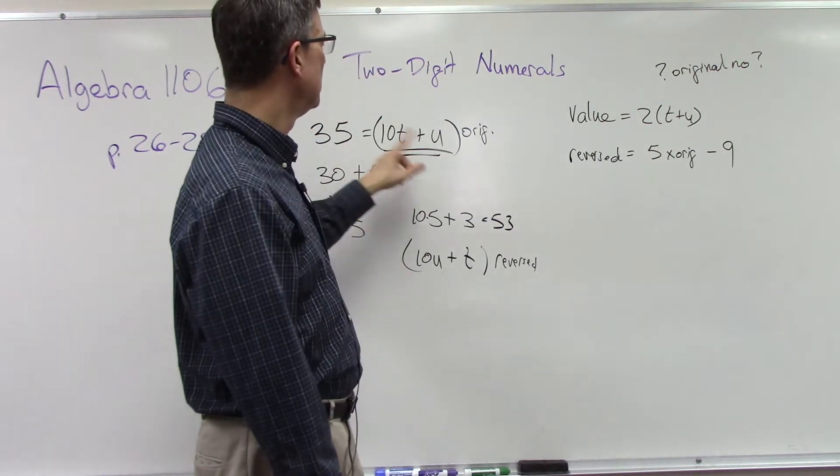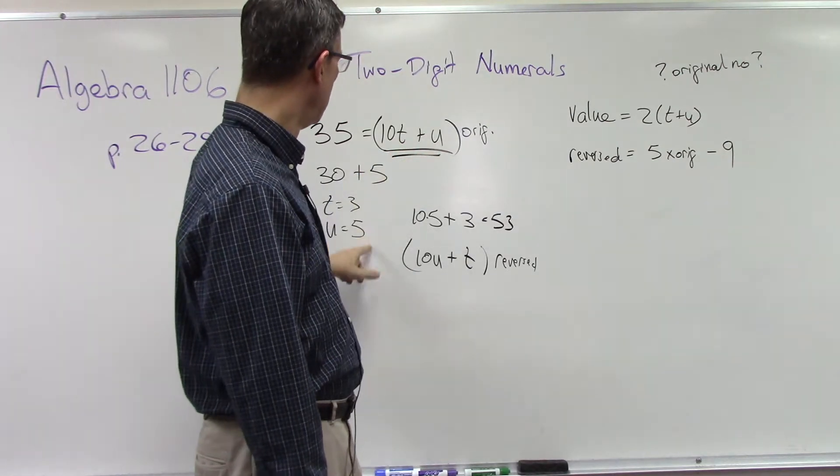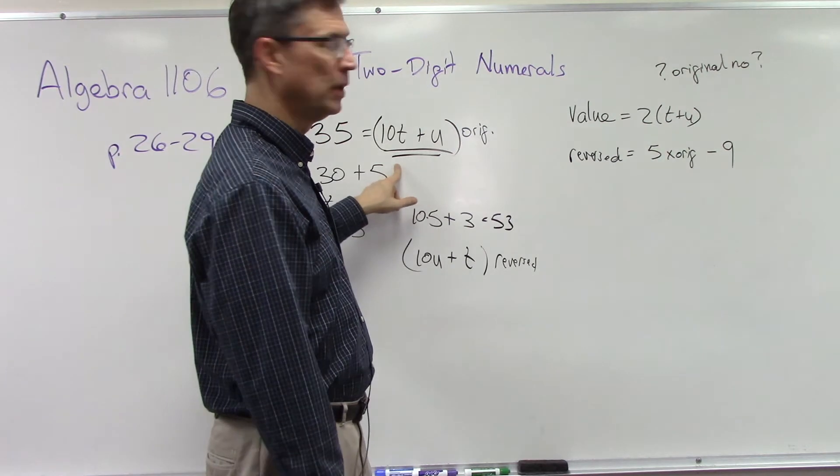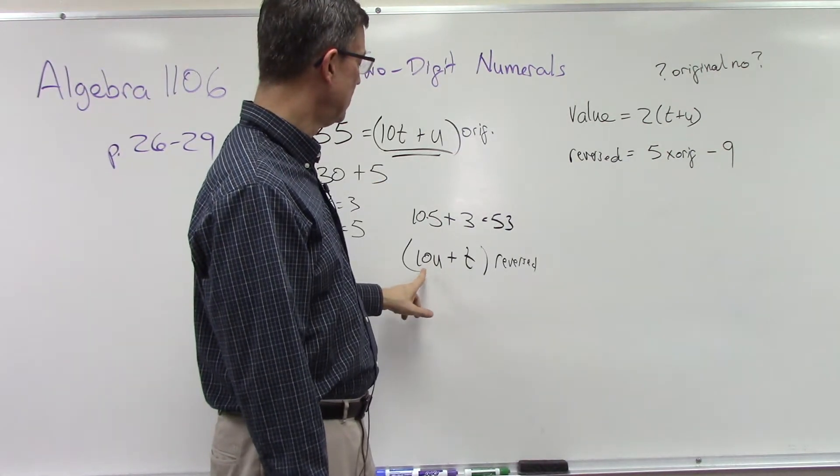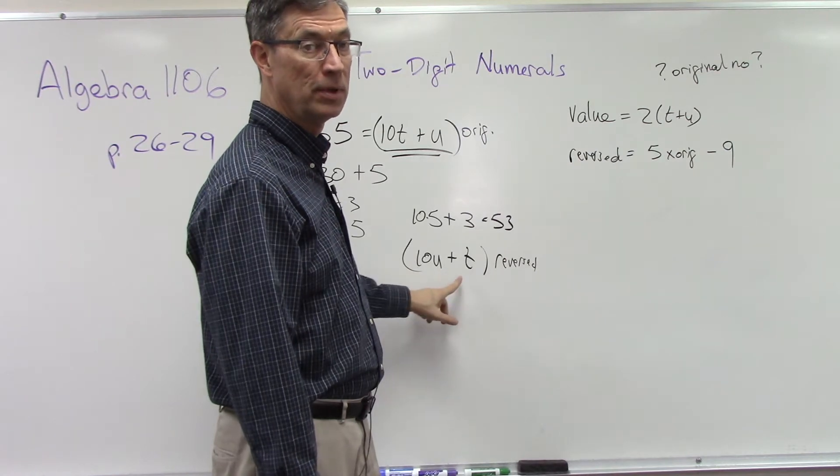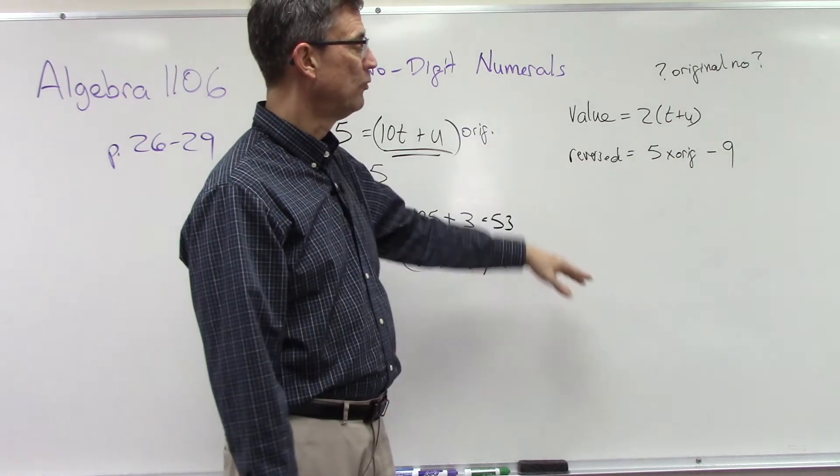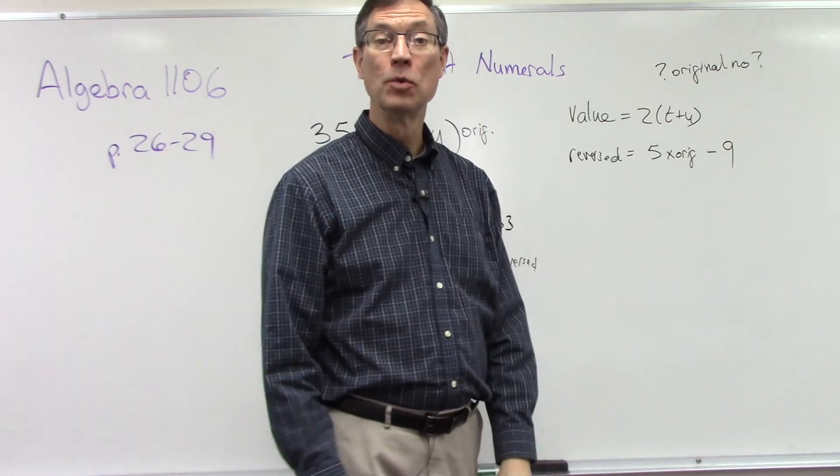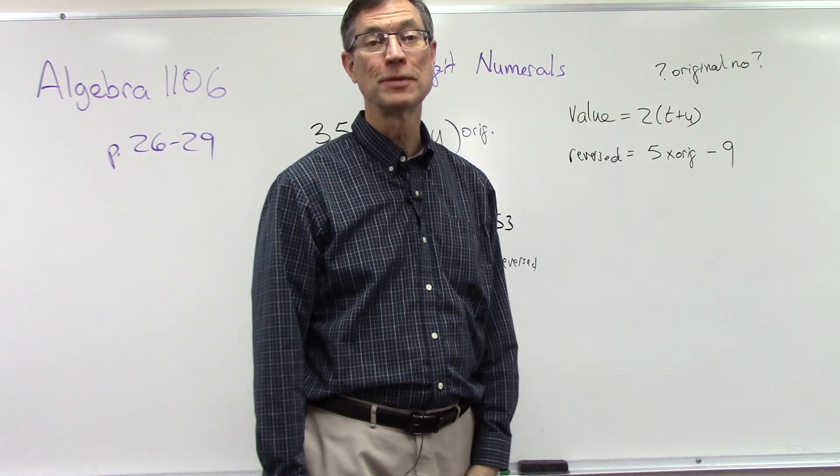That we're playing with the digits t and u, and the original number has to be this formula: 10 times the tens digit. And then when it's reversed, it's 10 times the units digit plus the tens digit. Okay, set up two formulas and solve. And I hope that little lesson will help you see the how in that problem, and that you'll be able to do it successfully.